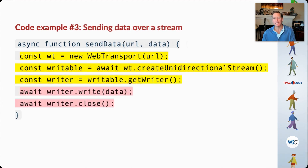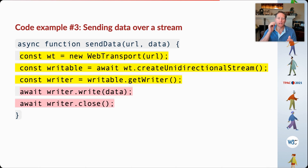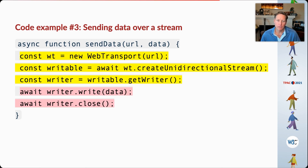What if I want to send data over a stream instead of over datagrams? In the yellow block, I create my Web Transport connection once again, then I create a unidirectional stream — I could have created a bidirectional stream as well; bidirectional streams are simply unidirectional streams in opposite directions. I get a writer on that unidirectional stream, write my data object to it, and then close the writer.